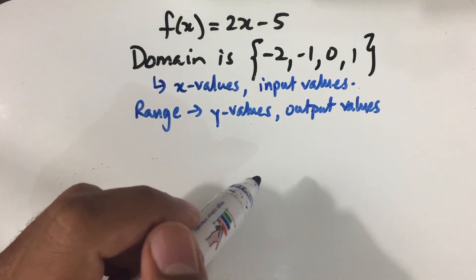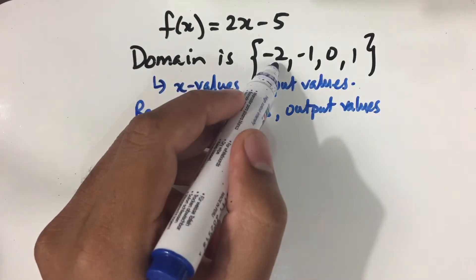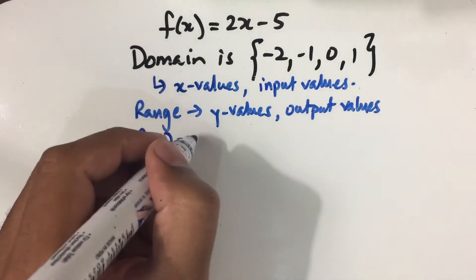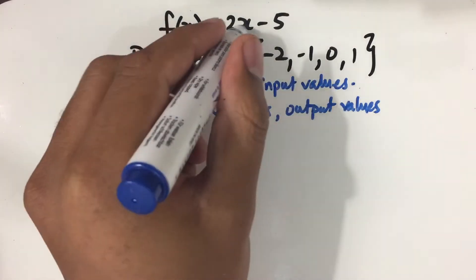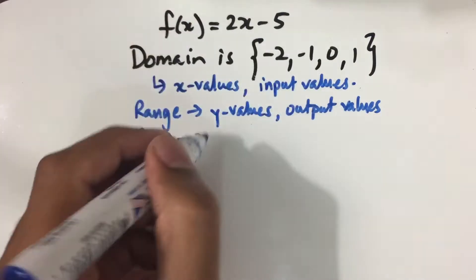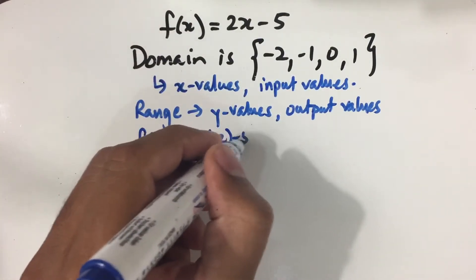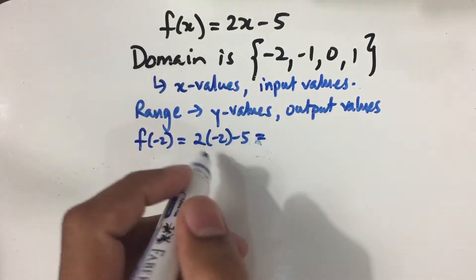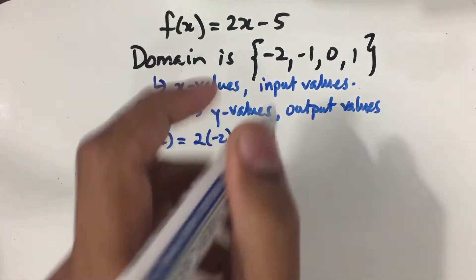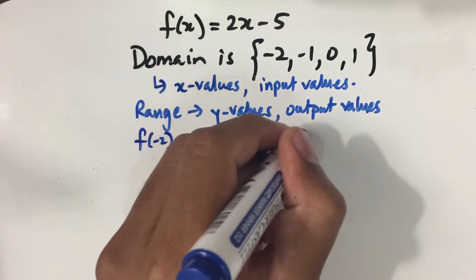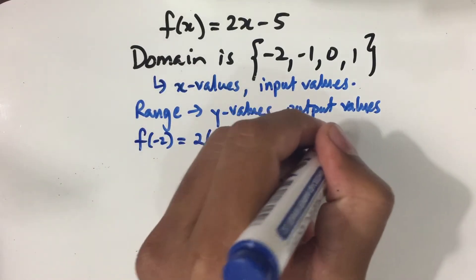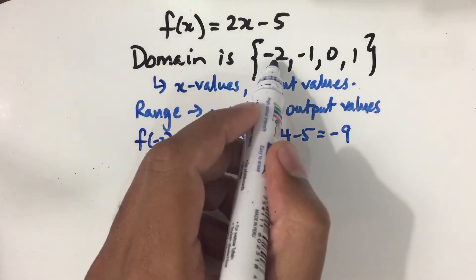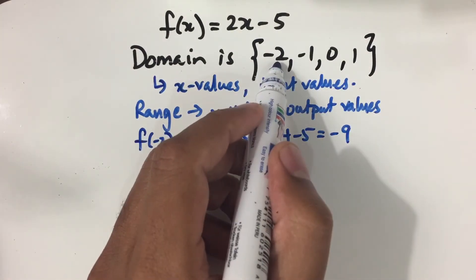Let's look at the input value -2. So f(-2) = 2 times -2, minus 5 = -4 - 5 = -9. So -9 is the output value for the input value of -2.